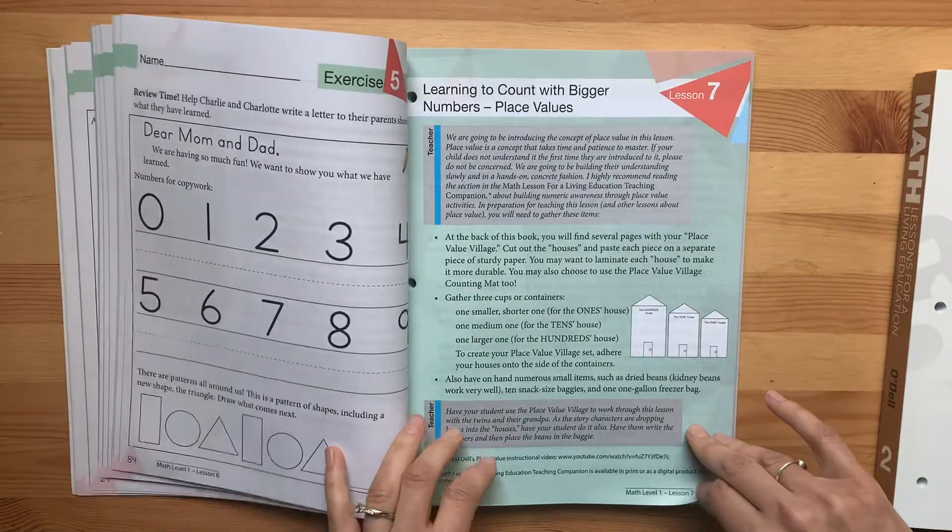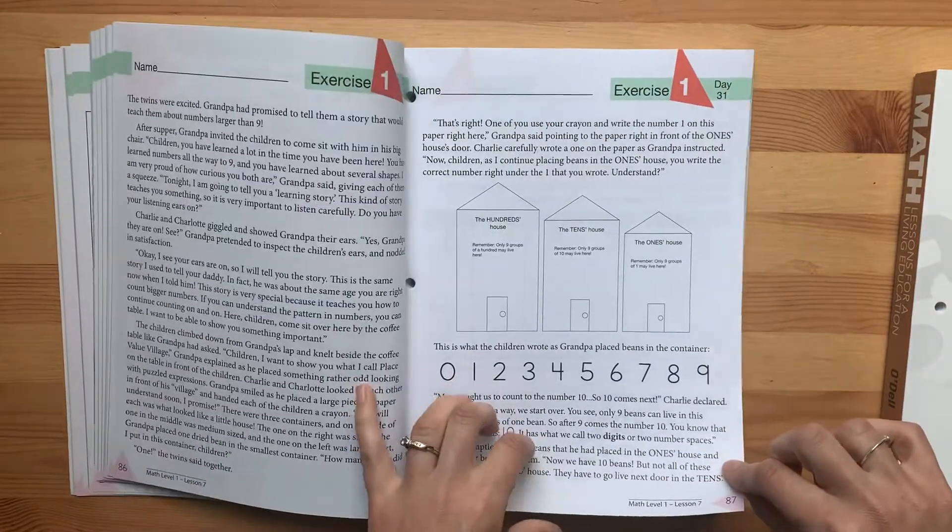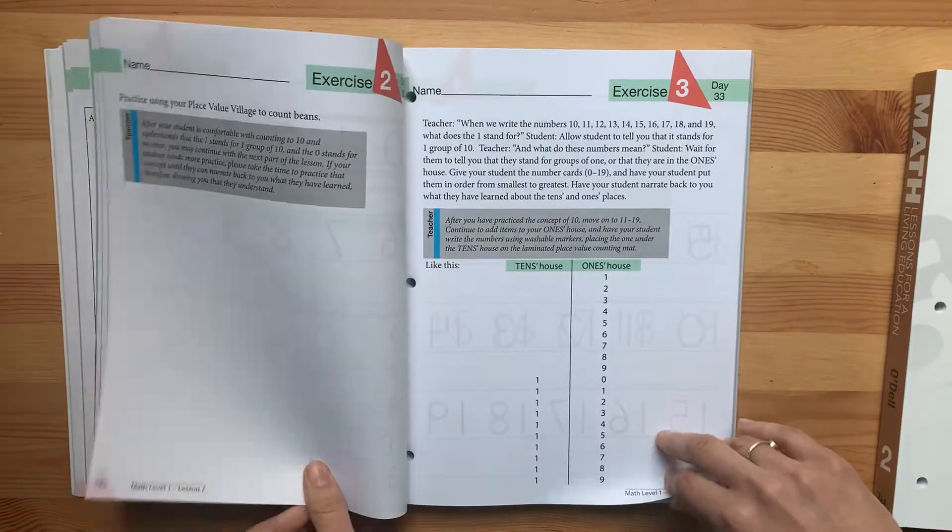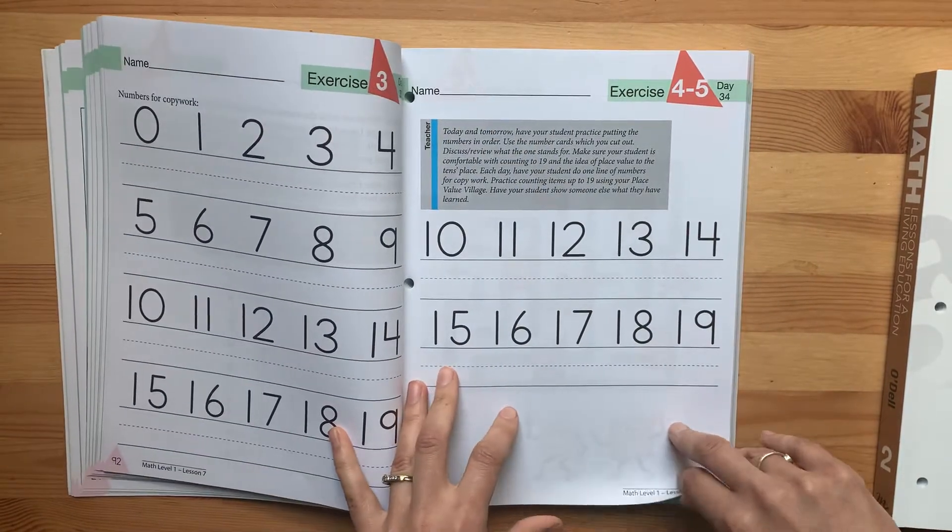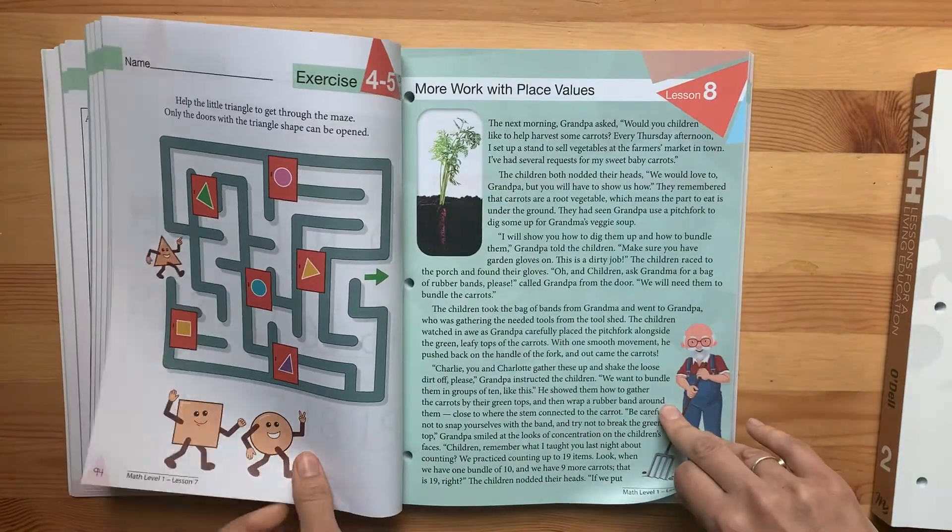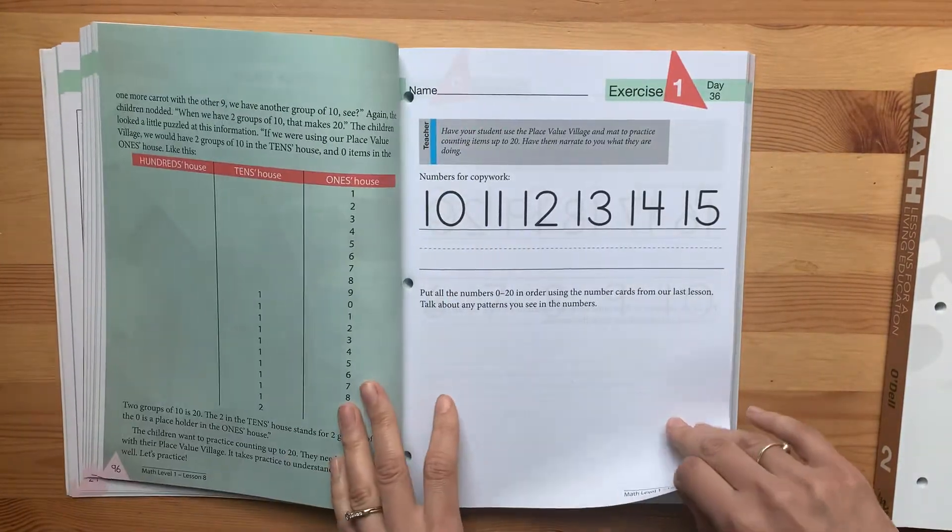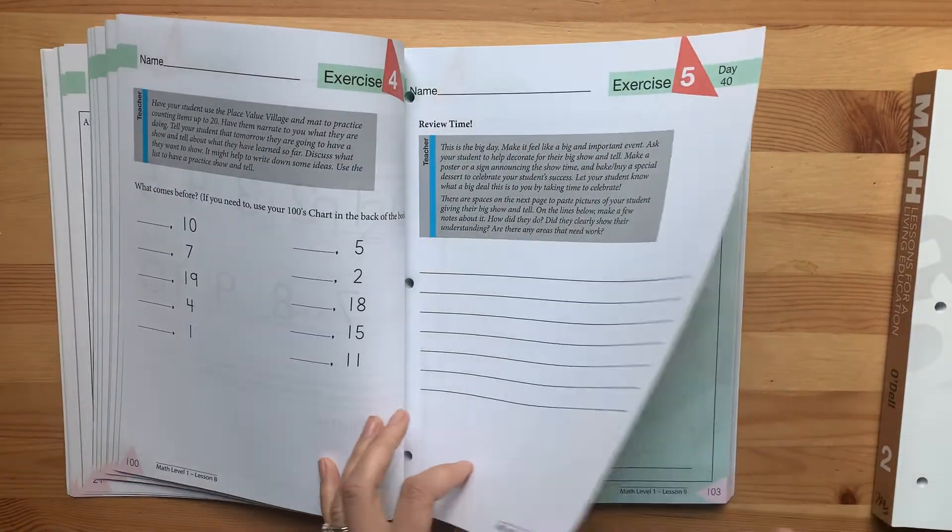Hoping that this will be a way to just keep it really fun. But this would be where I would start my kindergartener based on where she is at. She's starting the Good and the Beautiful level K, and that's a different presentation of most of these same concepts I'm looking at here in level one of Masterbooks.